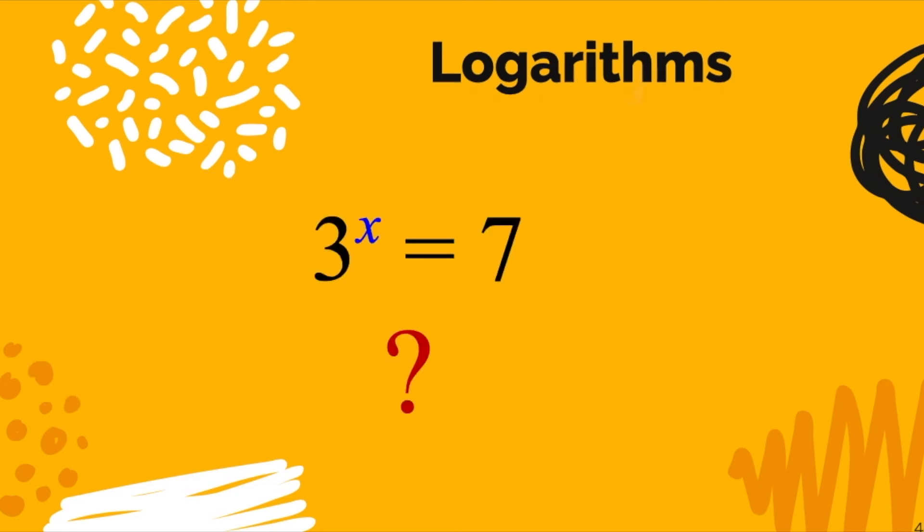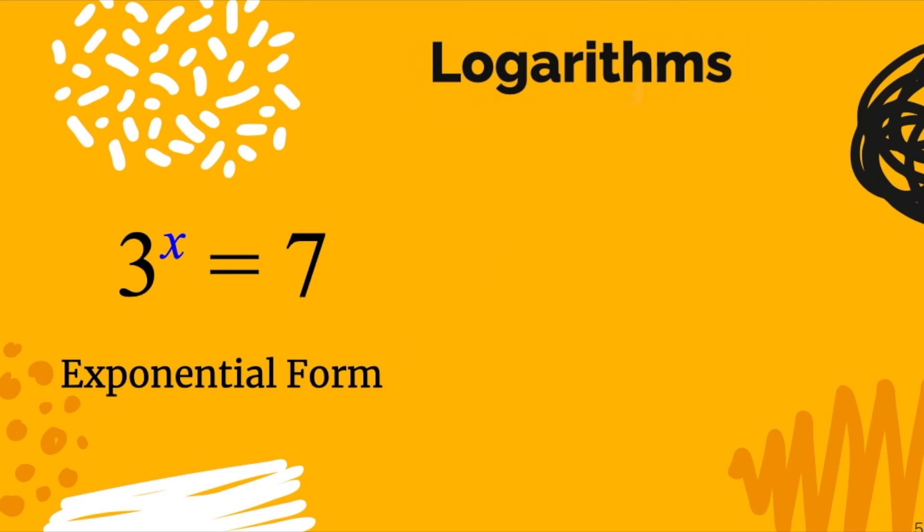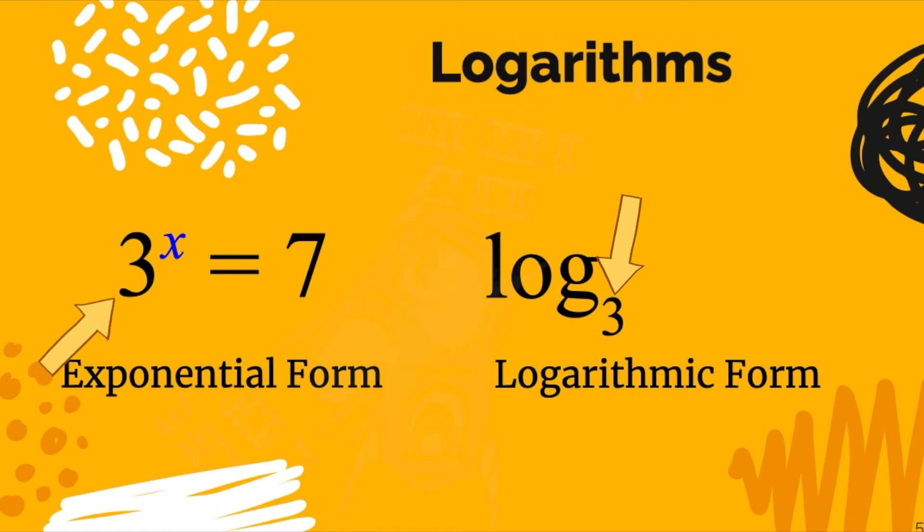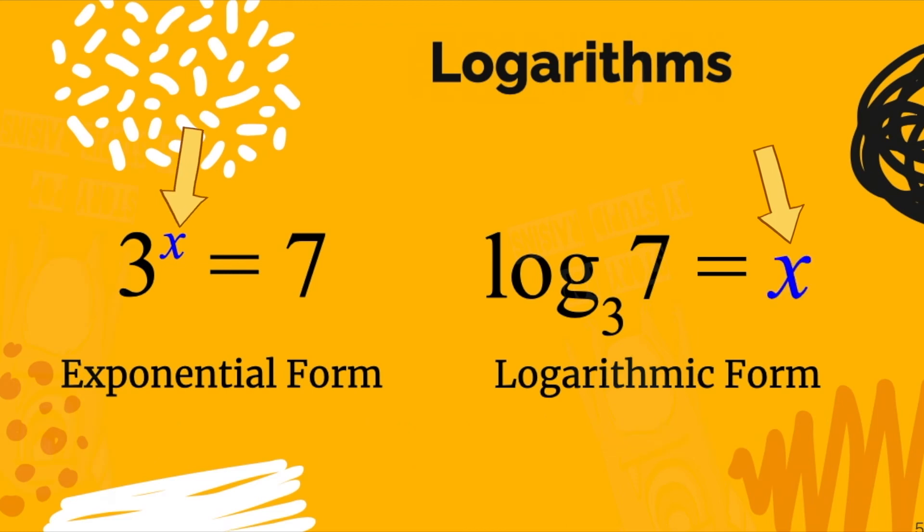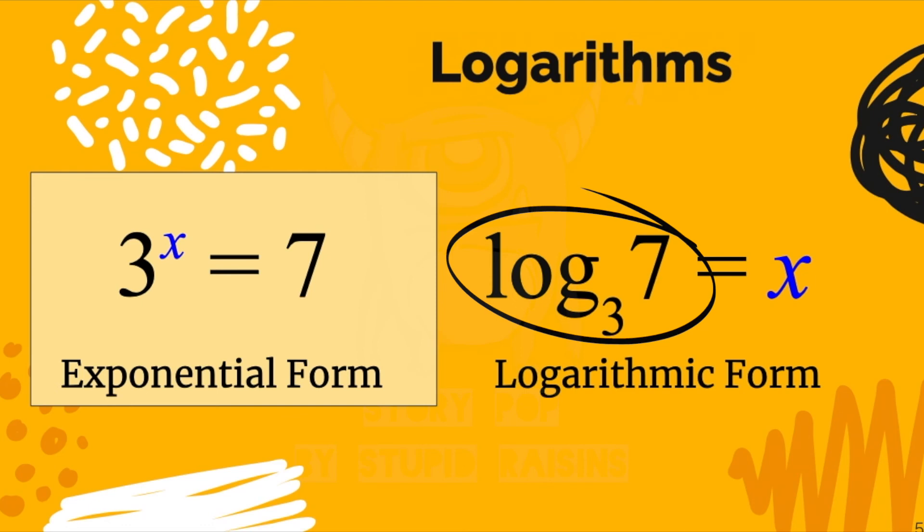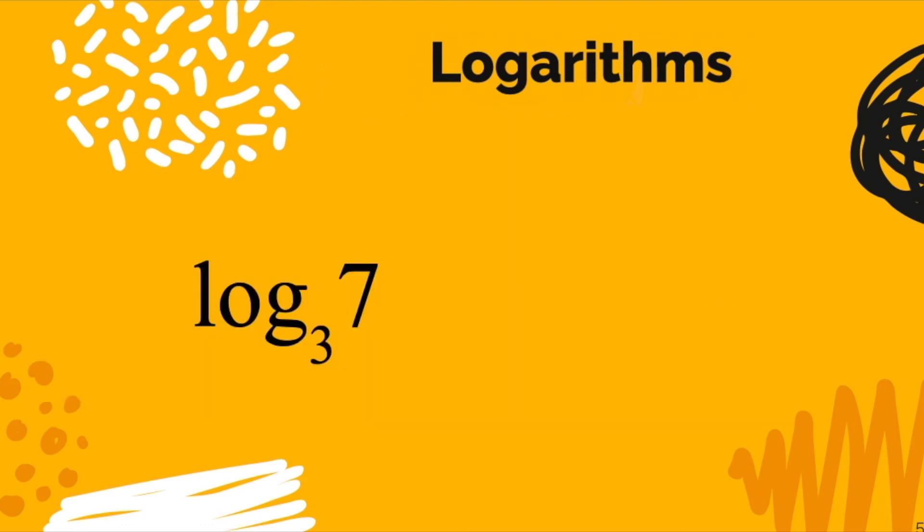Let's turn our attention back to the equation 3 to the x equals 7, which I brought up earlier in the video. How do we use a logarithm to solve this? Consider this to be exponential form, and maybe if we write it in logarithmic form, it might help. I've got the log written. The base is the base, so that's the 3. The inside of the logarithm is the answer on exponential form. Never forget that answers to logs are exponents, so the x is going to be on the right side of our logarithmic statement.